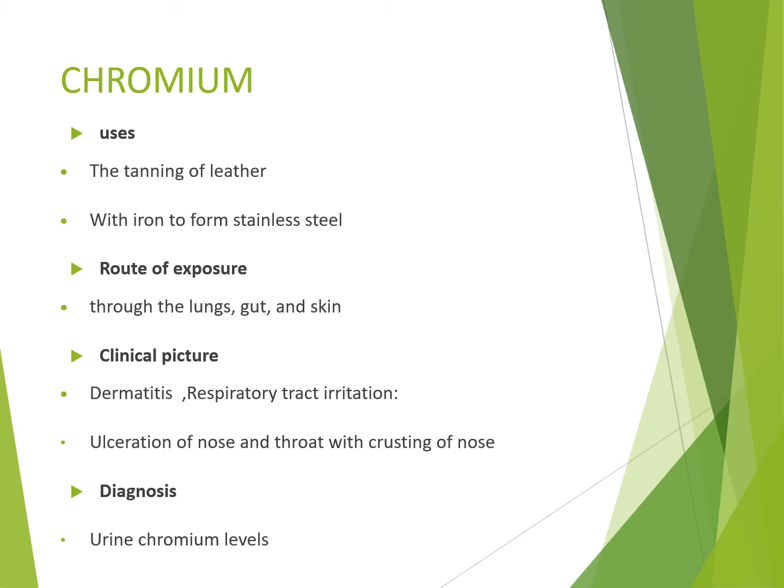الكروميوم بيعمل كمان nasal ulcers عند التعرض لكميات كتيرة. طب بنطلع الكروميوم ازاي؟ من اليورين. مهم تعرفوا فكرة الـ diagnosis دي: إن كل حاجة تعرف تلاقيها ازاي؟ - في الـ hair، في الـ urine، في الـ blood، أو عن طريق metabolites زي اللِّيد اللي بنقيس delta-aminolevulinic acid في اليورين.